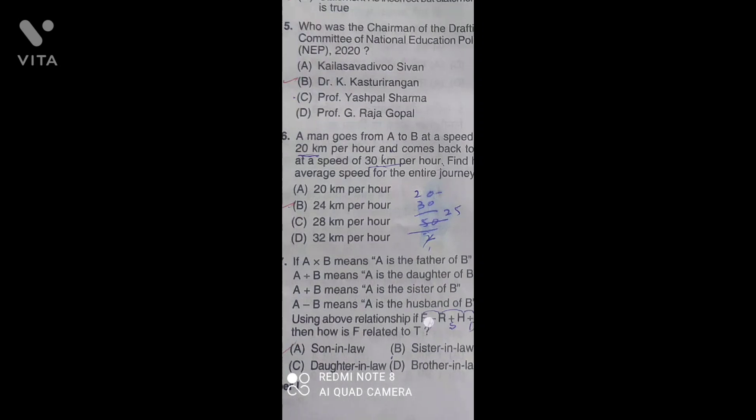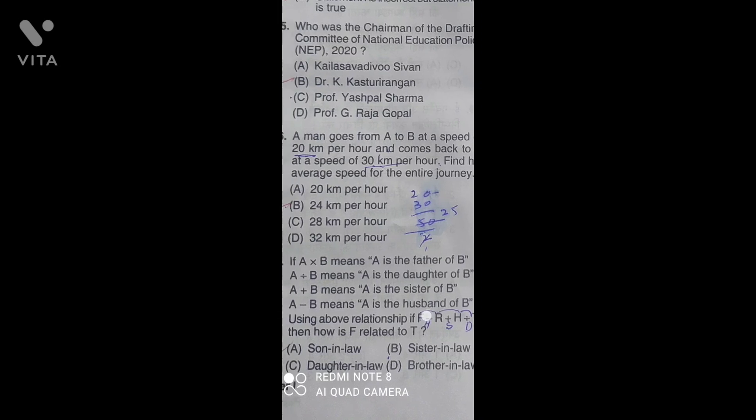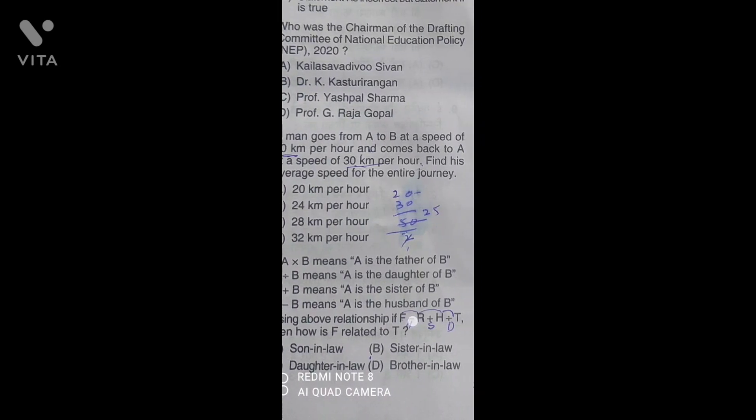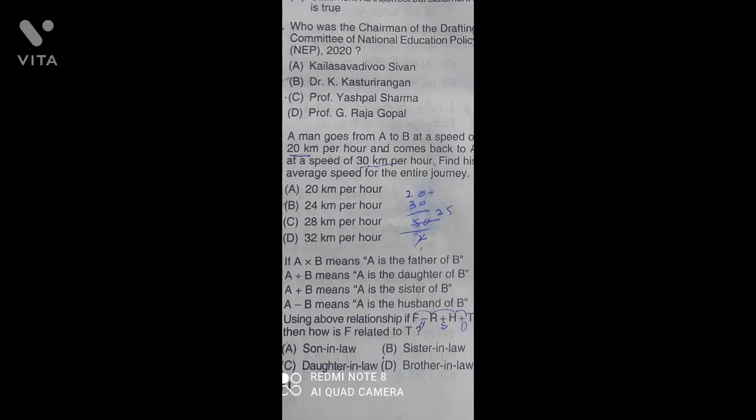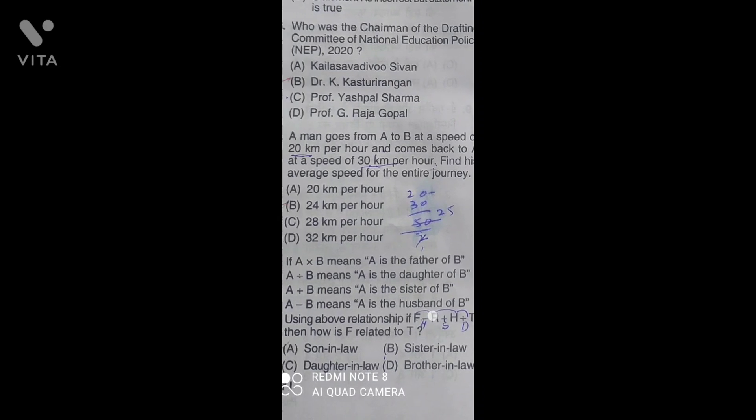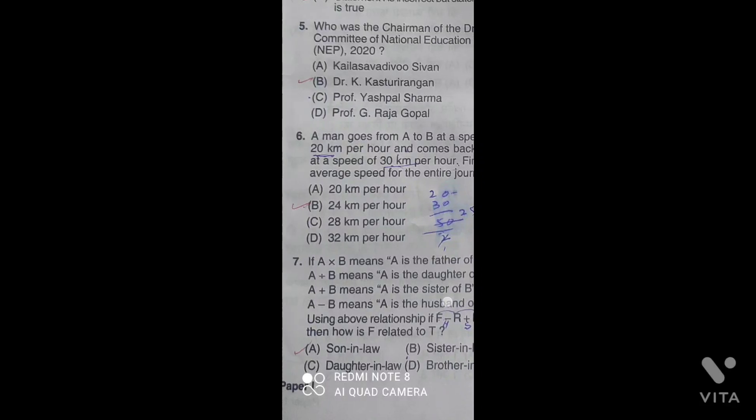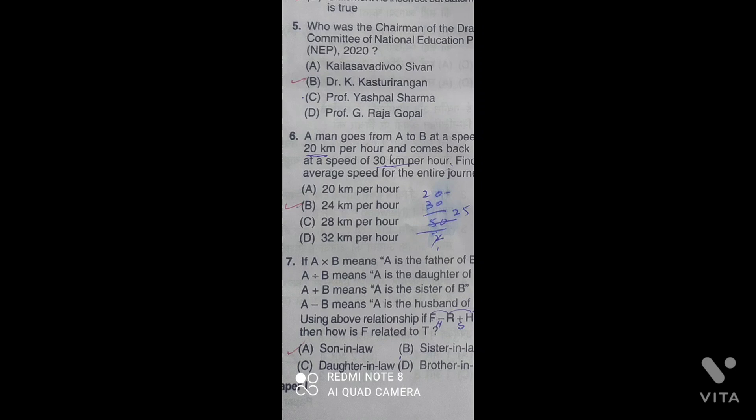A man goes from A to B at a speed of 20 km per hour and he comes back to A at a speed of 30 km per hour. Find the average speed of the journey. The correct answer is 24 km per hour.